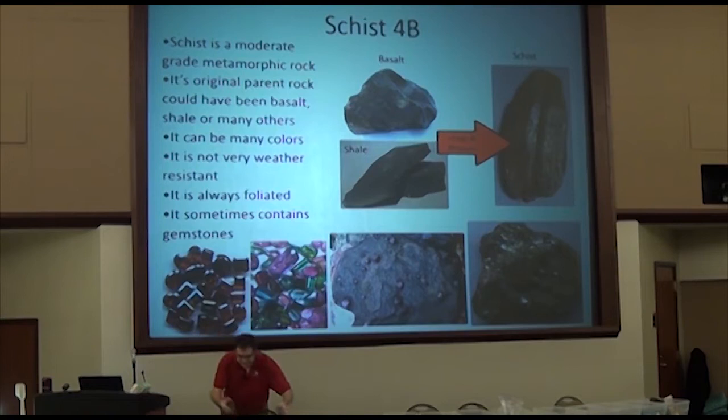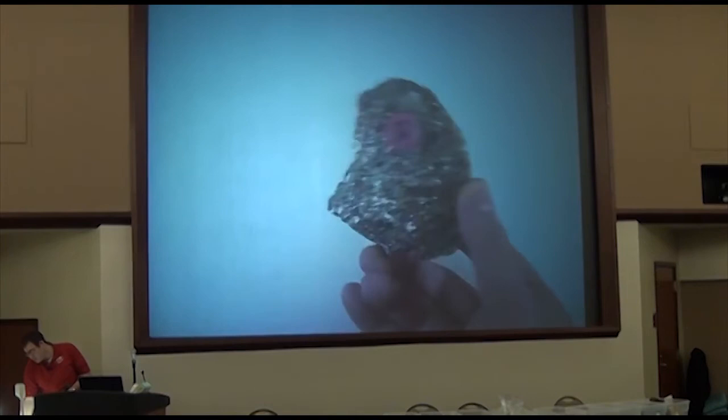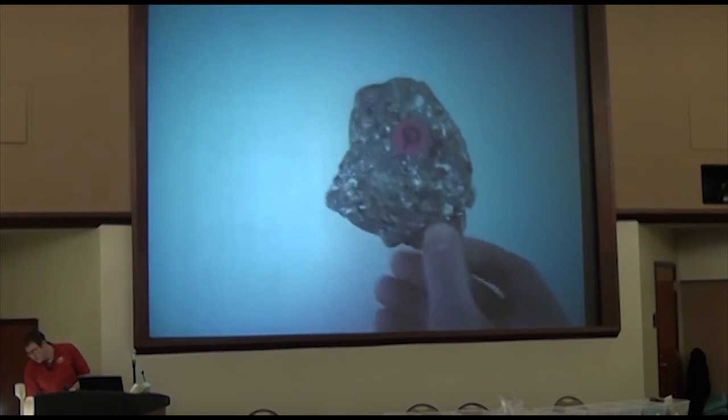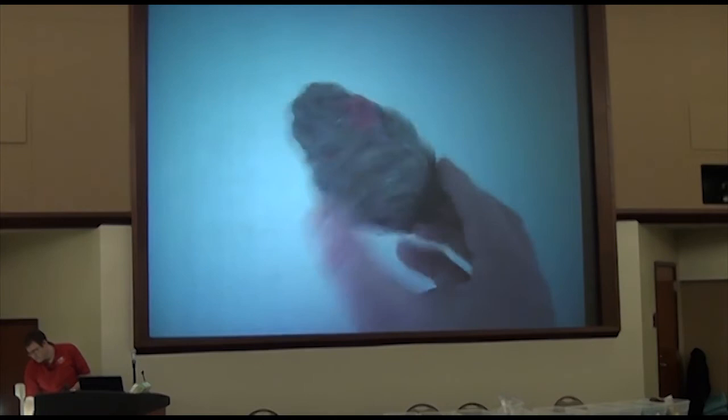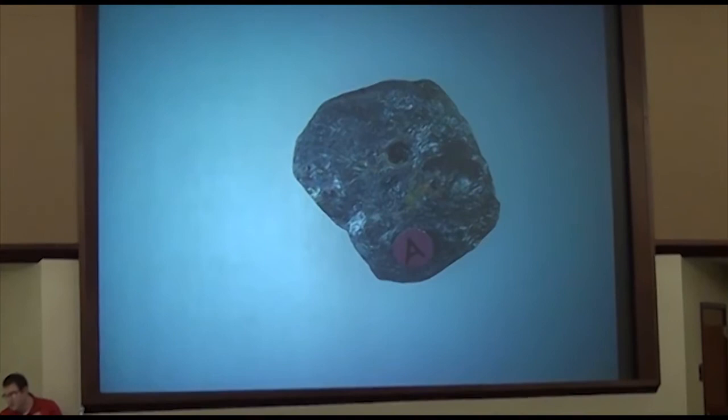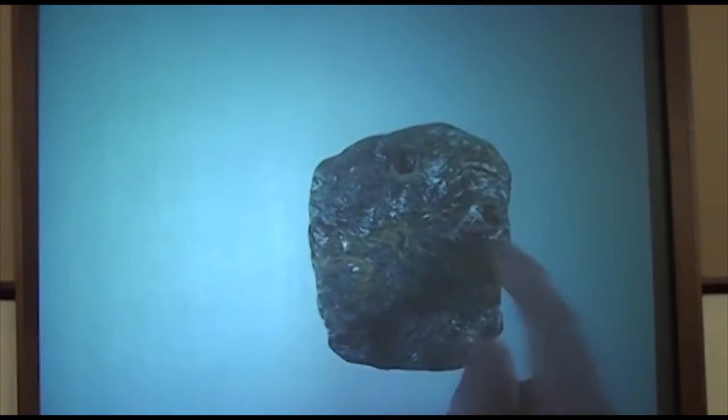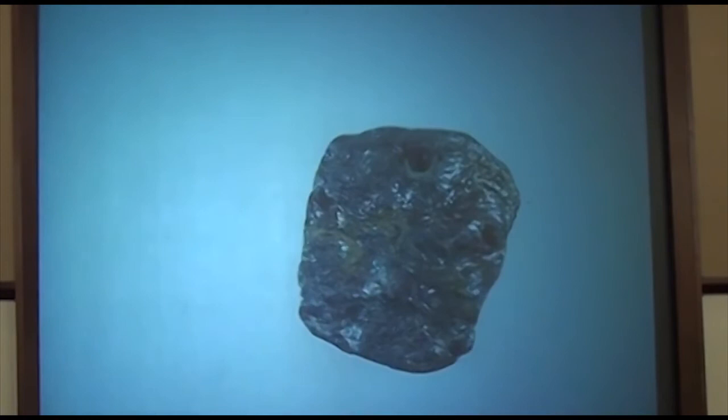Here are a couple of schist samples. This first one has very silvery mica, maybe a little brown, very shiny and reflective with pretty small but numerous garnets. You can see it's well foliated. This second one has a greenish body with fewer but bigger garnets. You can see it's foliated not only in one plane but also curly and curvy, which often happens.